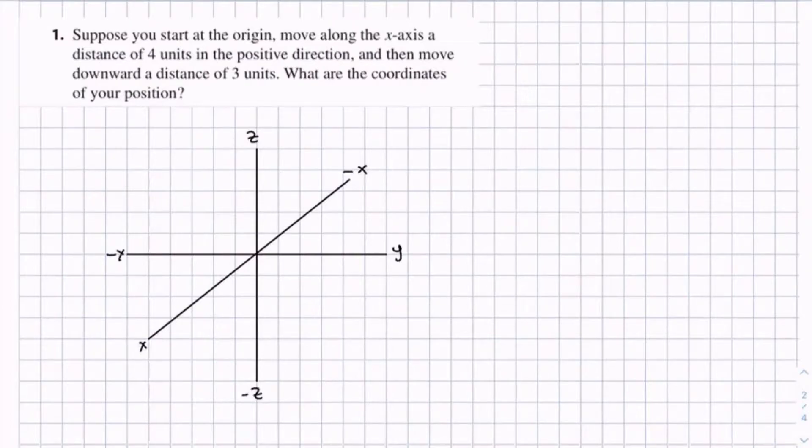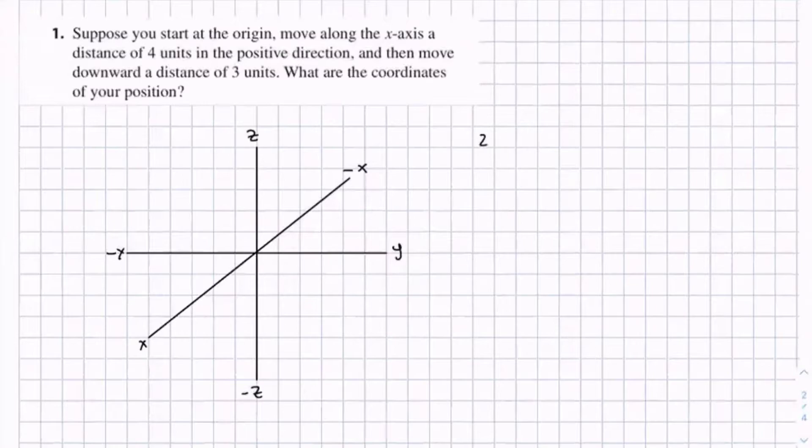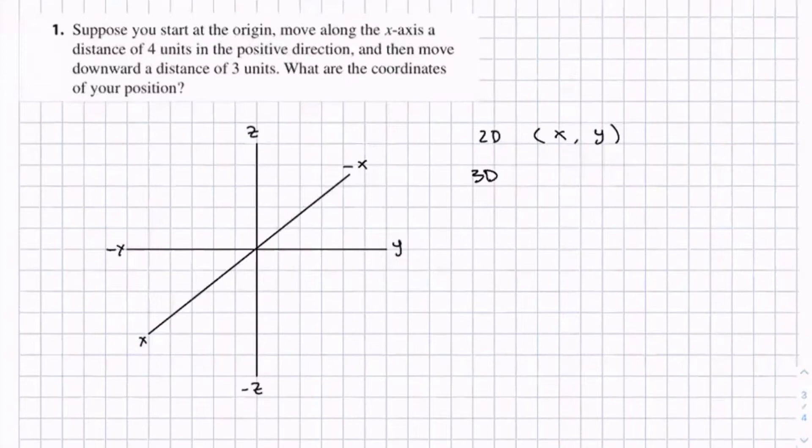So one thing I want to delineate is the difference between 2D coordinates and 3D coordinates. In 2D, you have your x coordinate and your y coordinate. 3D is almost the same, but since you have one more axis, you're going to have one more variable.